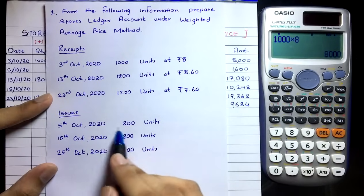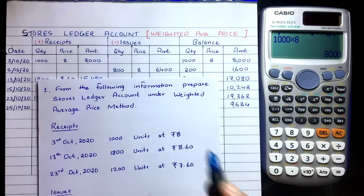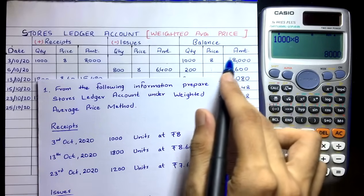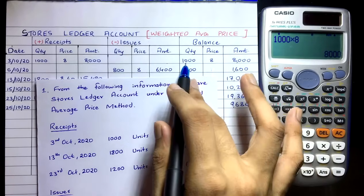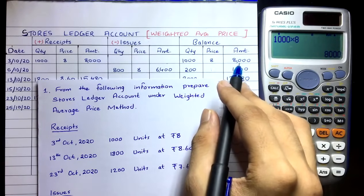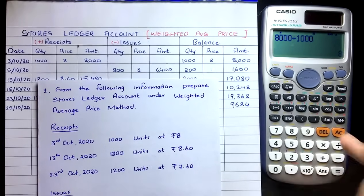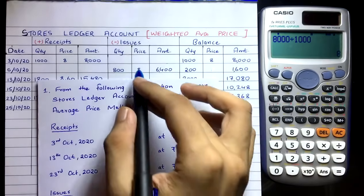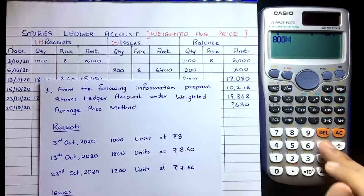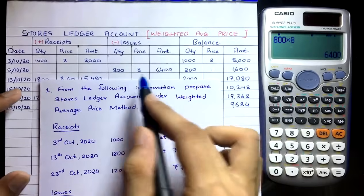On 5th October 2020, we issue 800 units. At what price? The weighted average price. Calculate it: total cost available ₹8,000 ÷ total quantity 1,000 = ₹8. So we issue at price ₹8. Cost of issue: 800 × 8 = ₹6,400.